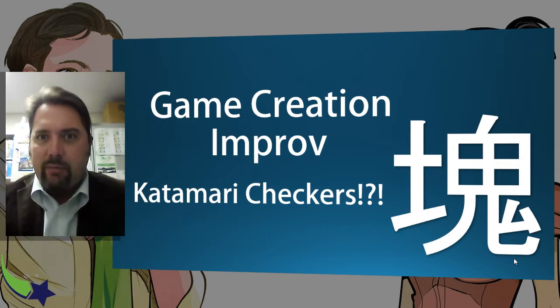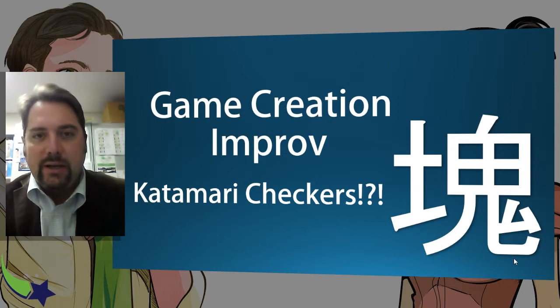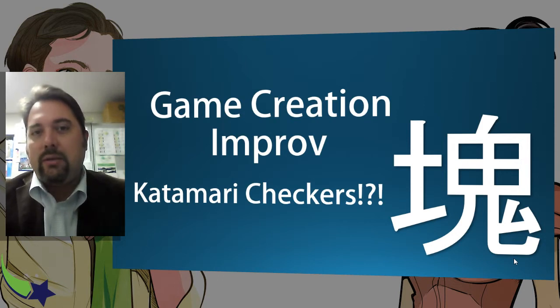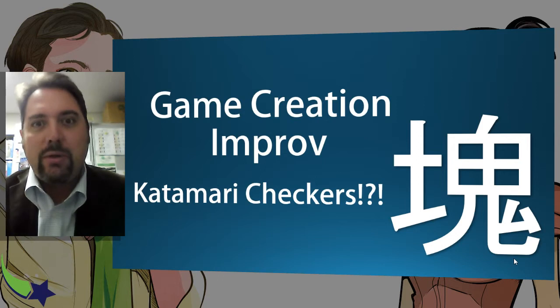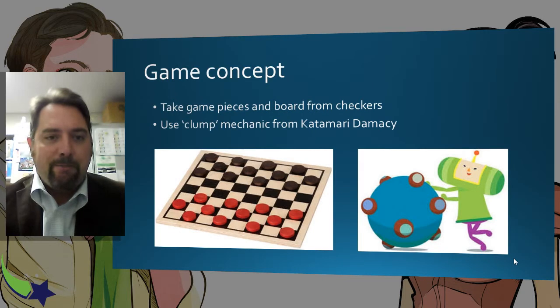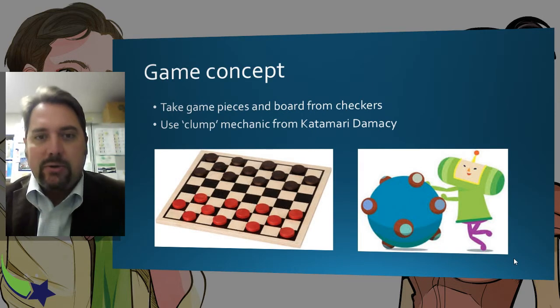One is a digital game. I'm kind of crossing two different games called Katamari Damacy and traditional Checkers. Now, Katamari is Japanese for clump. You can get the verb conjugate from that, Katamaru, which is to clump something together. And it's a digital game we'll talk a little about in a second here. So the concept is taking these two games.